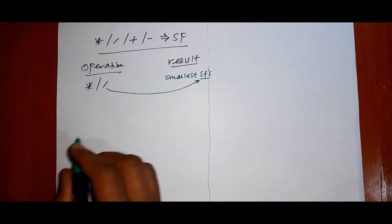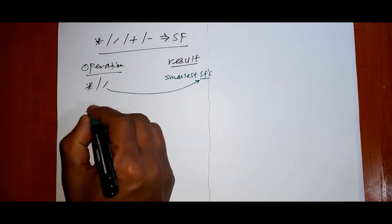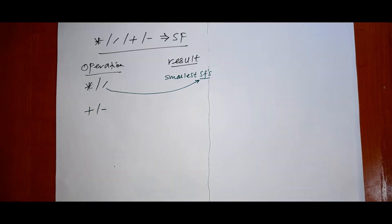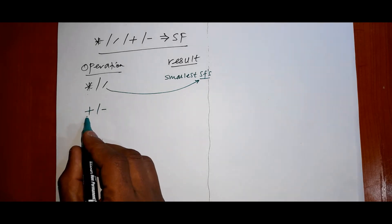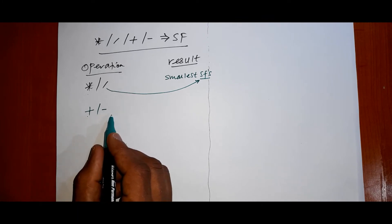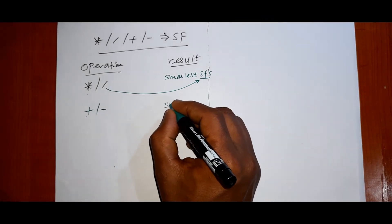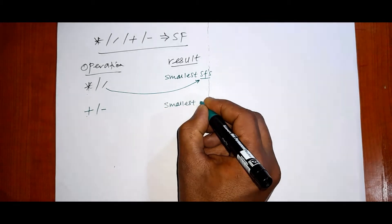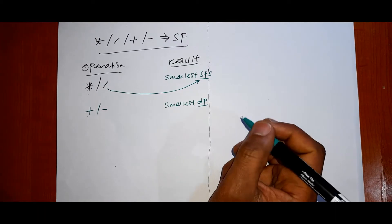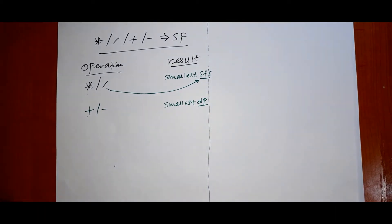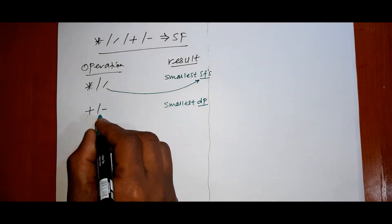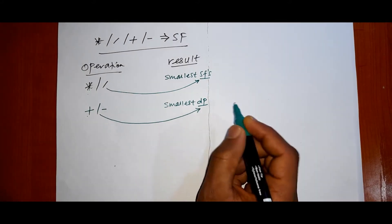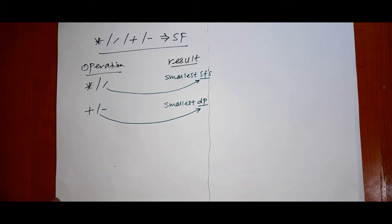Now, during addition or subtraction, the result has the same number of decimal places as the quantity with the fewest decimal places. The key thing is the decimal place — the smallest number of decimal places determines the result. Addition and subtraction are always related to decimal places, not significant figures.